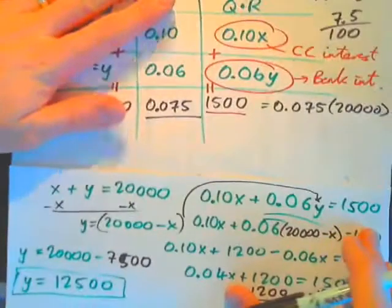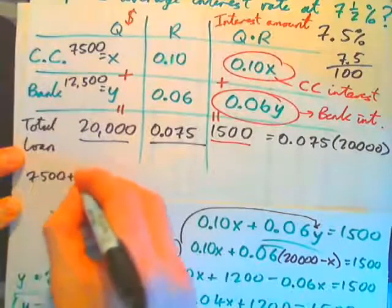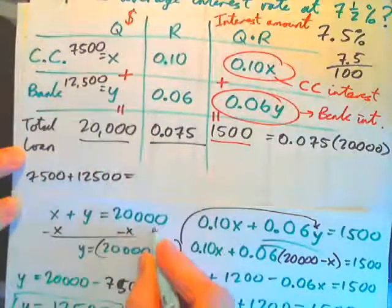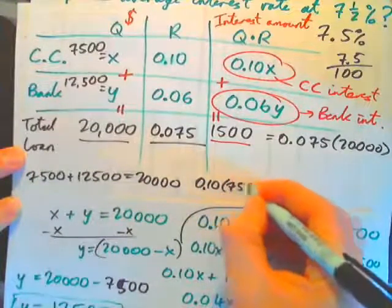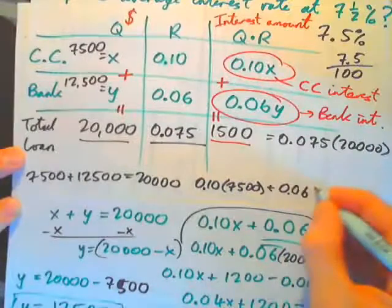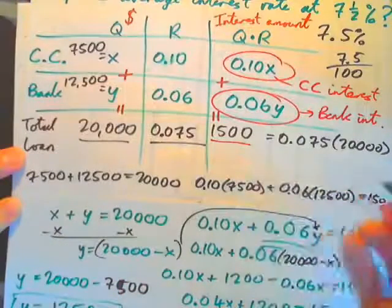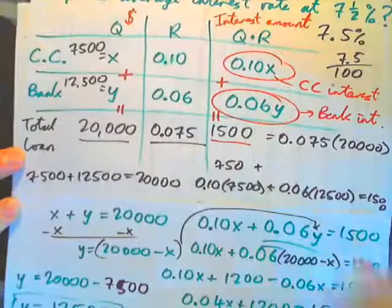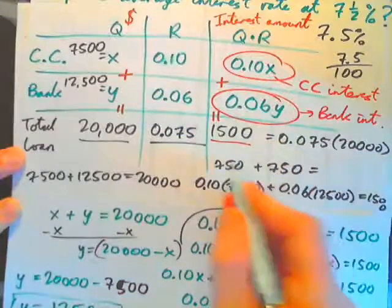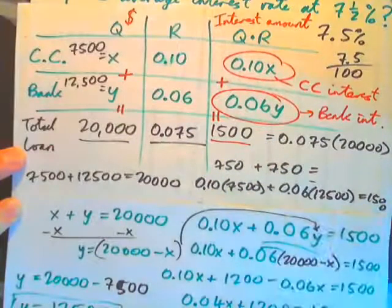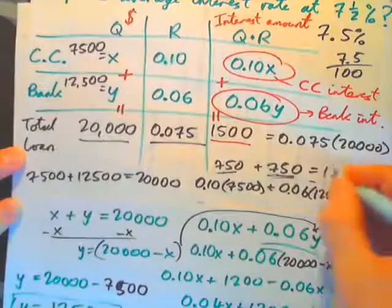Always check your answers. 7,500 plus 12,500 equals 20,000 ✓. Then 0.10 times 7,500 plus 0.06 times 12,500 gives 750 plus 750 equals 1,500 ✓. Interestingly, both locations contribute exactly the same amount of interest — $750 from the credit card and $750 from the bank — totaling $1,500.